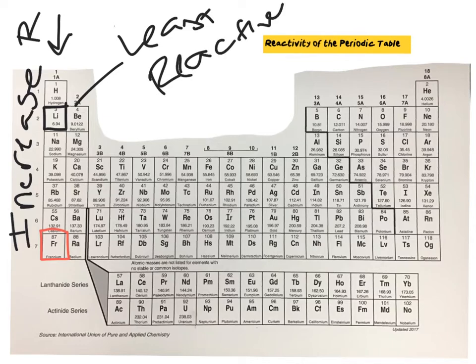Moving down, sodium is going to be slightly more reactive, potassium is going to be even more reactive than sodium, rubidium is more reactive than potassium, and cesium is going to be more reactive than rubidium. Francium, here in red, is going to be the most reactive of the metals found in group 1.